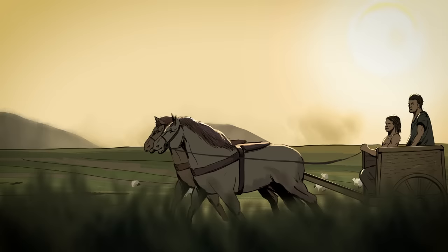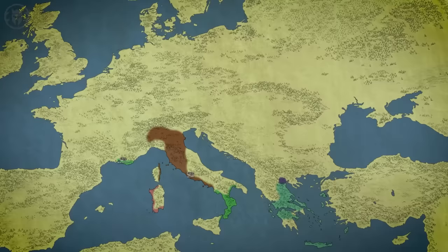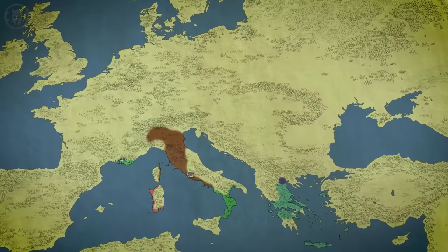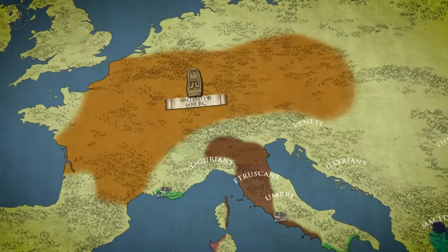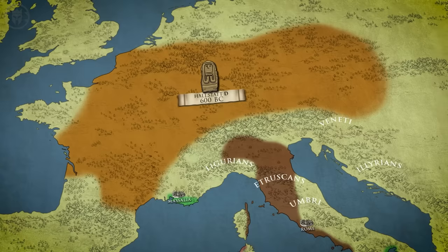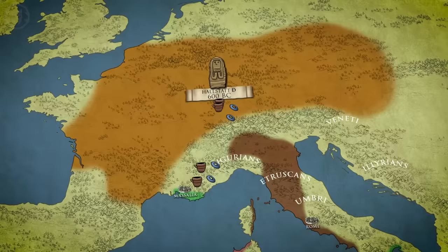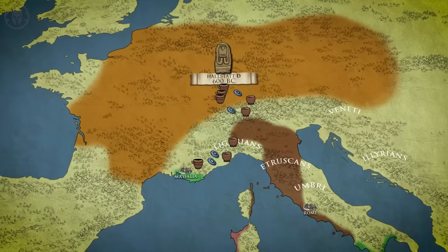The transition from Hallstatt C to D occurred around 600 BC, and was marked by the culture shifting west along the Danube, Rhine and Seine rivers, gravitating towards the Greek colony of Massalia, modern Marseille. The Phocian Greeks of Massalia were the early Celts' gateway to the riches of the Mediterranean world. Through them they imported all sorts of southern luxuries, including fine pottery, glass, and the most precious luxury of all, wine. Late Hallstatt peoples soon began trading with other Mediterranean peoples, including the Phoenicians and the Etruscans, whose advanced civilization we've covered in a previous episode.